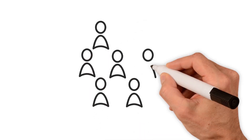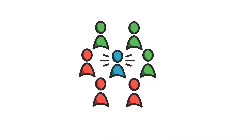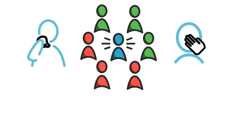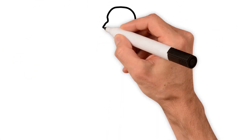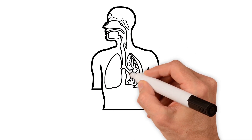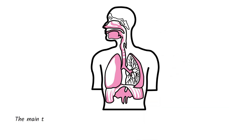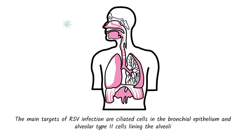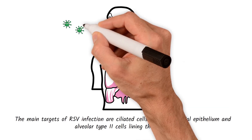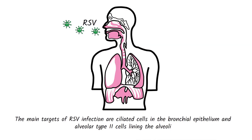RSV spreads like other viruses that cause respiratory disease. RSV infects airway epithelial cells, first in the upper respiratory tract, then in the lower respiratory tract.